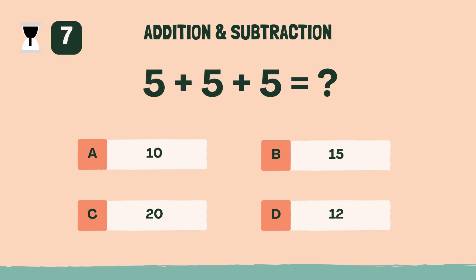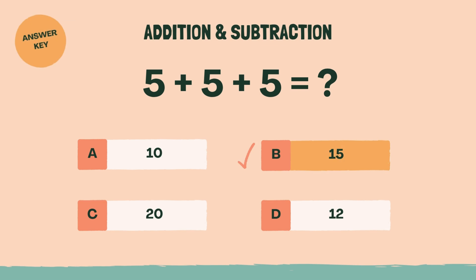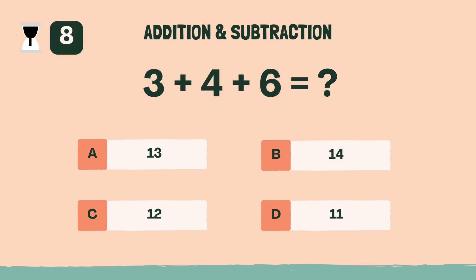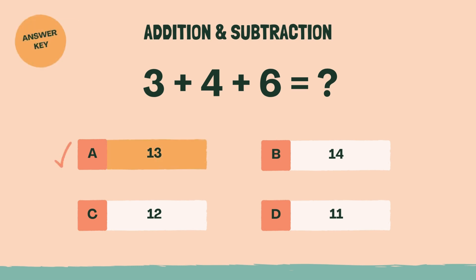What is 5 plus 5 plus 5? B, 15. What is 3 plus 4 plus 6? A, 13.